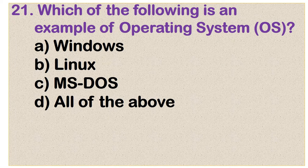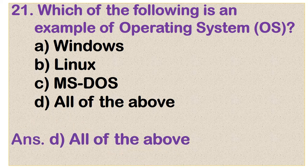Question number 21: Which of the following is an example of an operating system? Options are Windows, Linux, MS-DOS, and all of the above. And the correct answer is option D: all of the above.